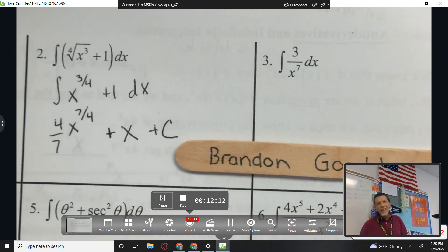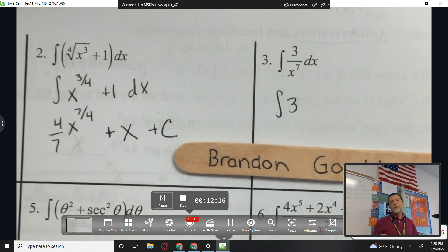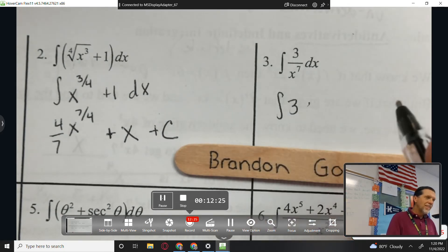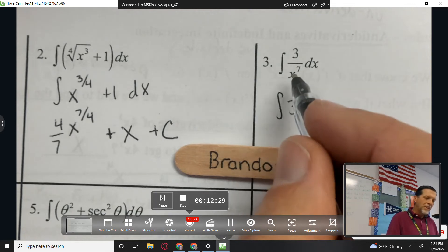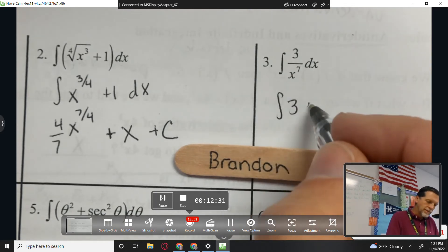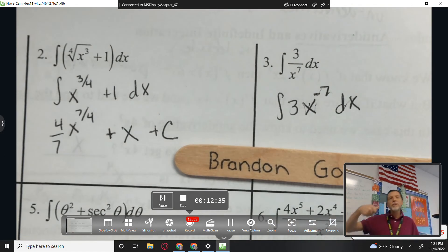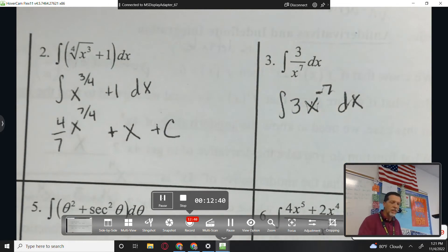Number three. Brandon, I don't like variables in the bottom. Is there a way I could rewrite that? You make the x a negative? What do I make negative? I don't want to make the x negative. I want to make the seven negative, because that's what flipped it into the bottom. The reason it's in the denominator is it was x to the negative seven.